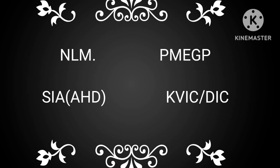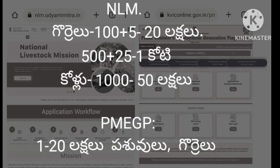If you want to contact us, we are going to show you the details on how to apply. In the NLM scheme, we have 25 units, and we are going to show you the project.